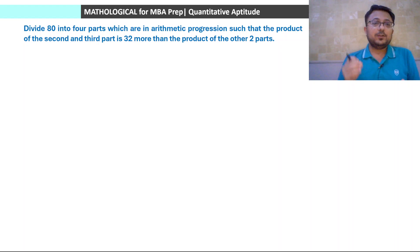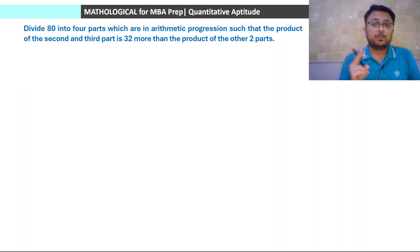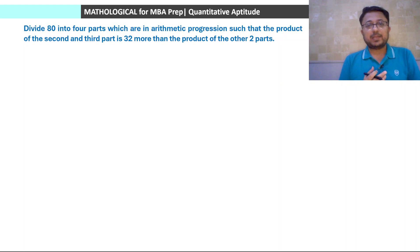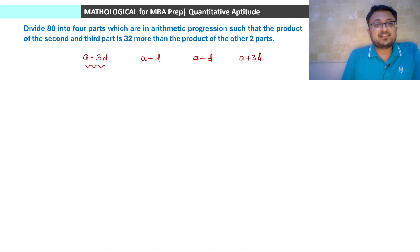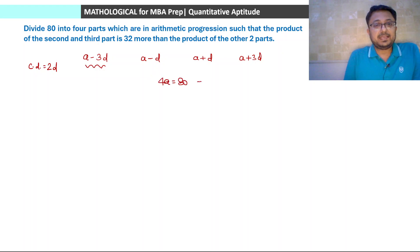Let us take the first question of today's session. Pause the video and try to solve it first yourself, then check the solution. The question says: divide 80 into 4 parts which are in arithmetic progression. Whenever we have to divide into 4 parts, the better approach is to let those 4 parts be: a minus 3d, a minus d, a plus d, and a plus 3d. Note that the first term is a minus 3d and common difference is 2d. Sum of all 4 will be 4a. So 4a = 80, giving a = 20.